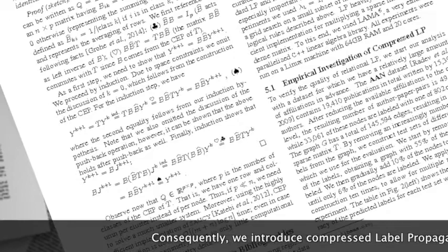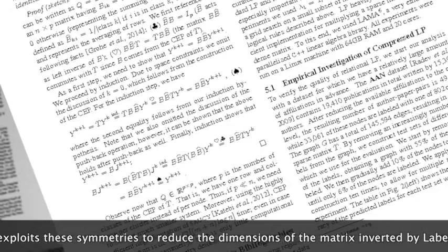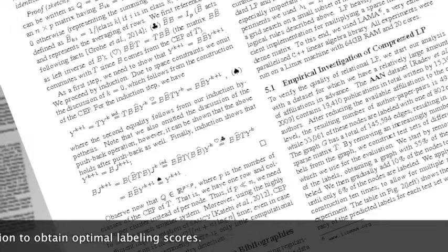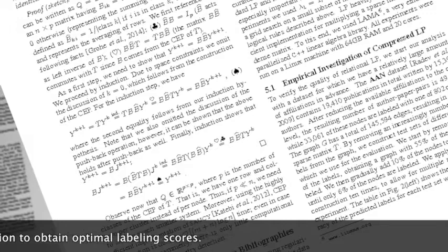Consequently, we introduce compressed label propagation that exploits these symmetries to reduce the dimensions of the matrix inverted by label propagation to obtain optimal labeling scores. We prove that our compressed version reaches identical labeling scores as label propagation, while often being significantly faster with lower memory usage.